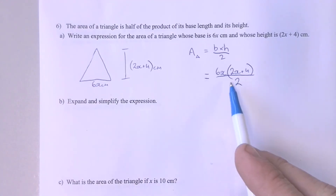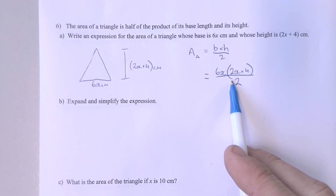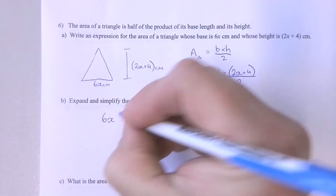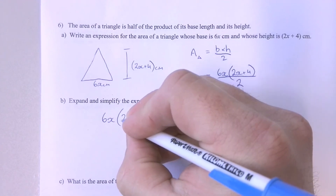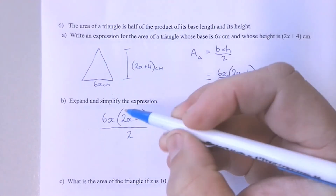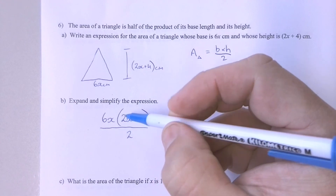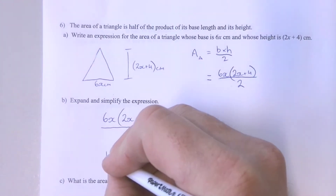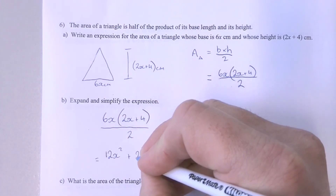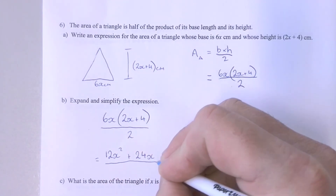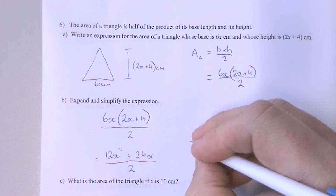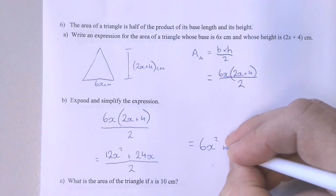Question 6B asks us to take our expression developed in 6A and to expand and simplify it. We've got 6X multiplied by 2X plus 4, all divided by 2. Remember this is base times height divided by 2, so we're looking for the area of the triangle. 6X times 2X makes 12X squared, plus 6X times 4 which is 24X, all divided by 2. This is really saying half of each term, so we can simplify that to 6X squared plus 12X.